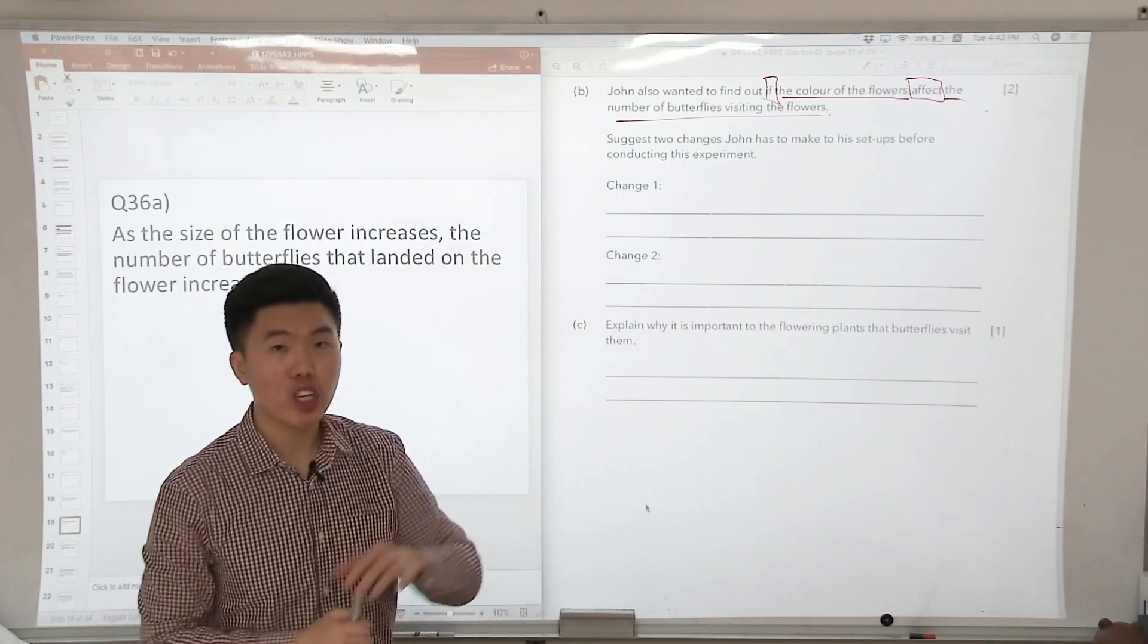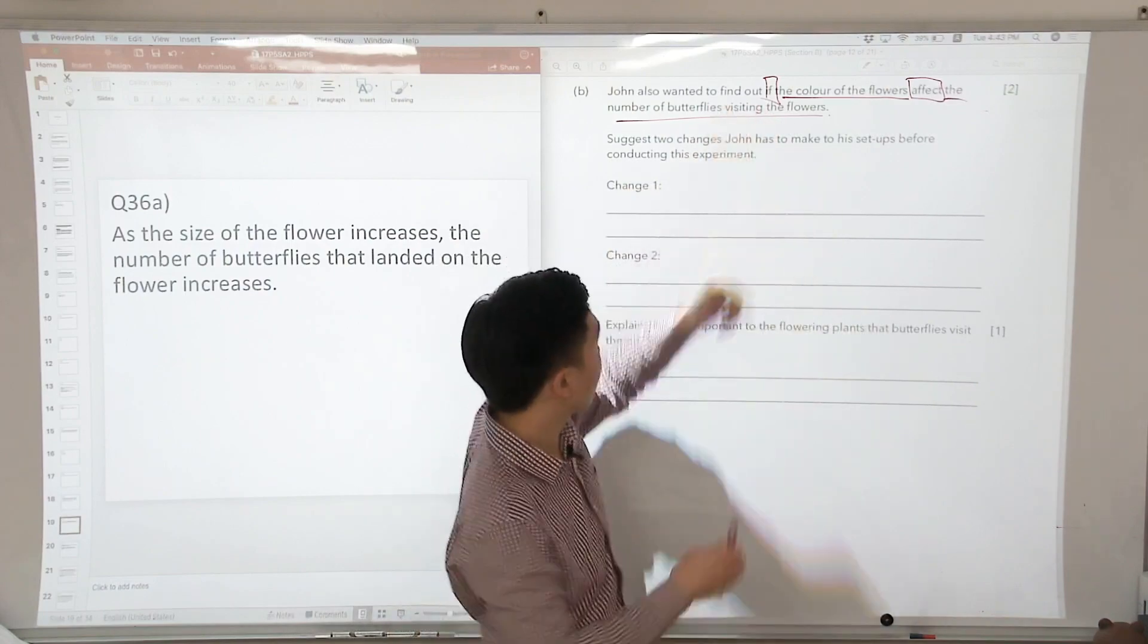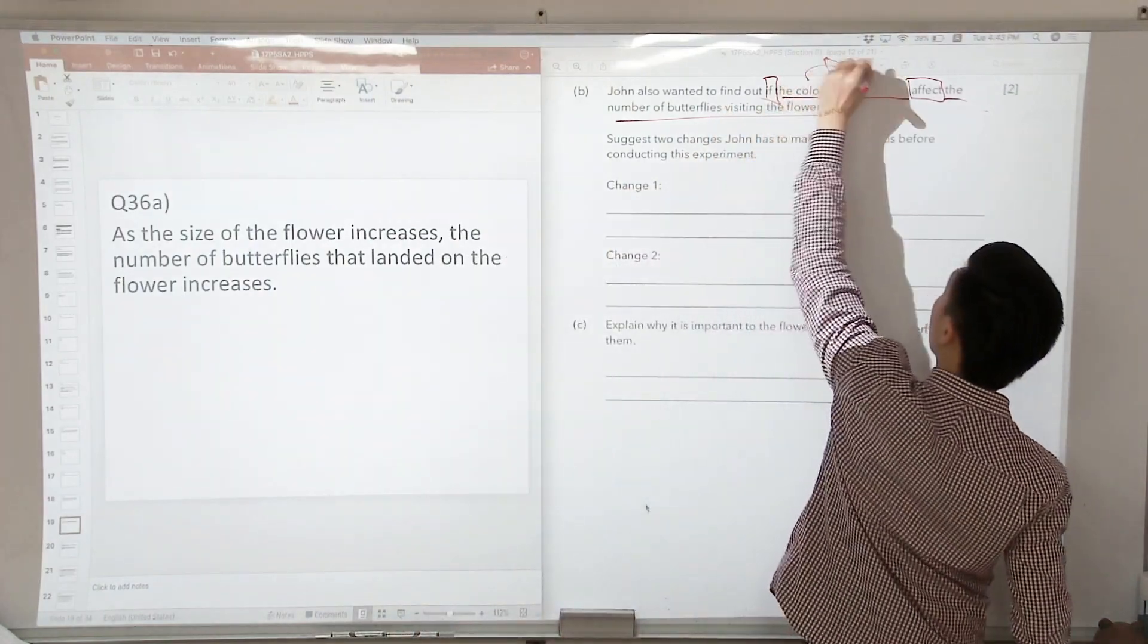Previously, what was the change variable? It was the size of the flowers. So now we are testing the color of the flowers. The color of the flowers become the change variable.